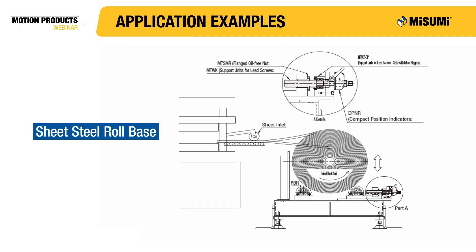Shown here is a sheet steel roll base. In this application, a lead screw is used to move a support roller with respect to its mating roller, changing the height of the roll of the sheet steel. The rotational speed is small as the height of the roller does not need to be continually adjusted. Neither absolute positioning, nor repeatability, nor backlash, nor continuous power transmission are critical in this application. As such, the added expense of a ball screw is not justified.